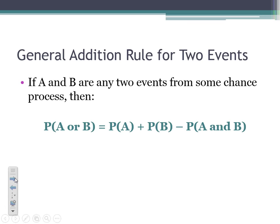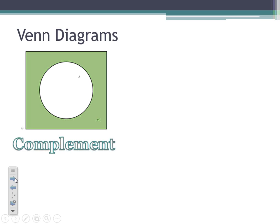Now let's get into some Venn diagrams. You've probably seen Venn diagrams before, so I'll show you different Venn diagrams and what they can represent in probability settings, noting some notation. The first diagram represents the complement. The square shape represents the entire sample space, labeled S. The circle represents event A, and everything outside of the circle represents the complement of A. That's how we represent a complement.